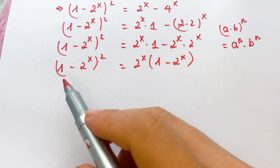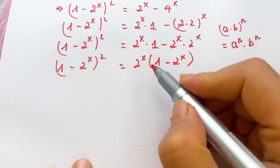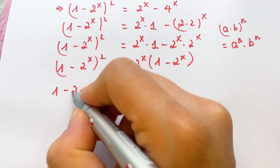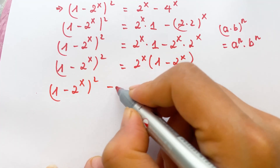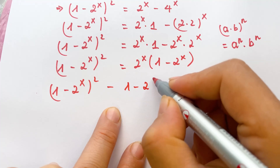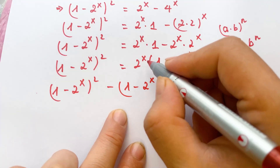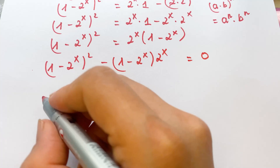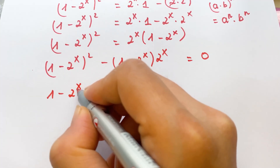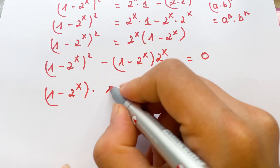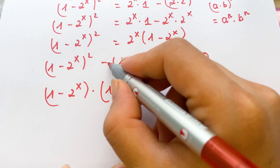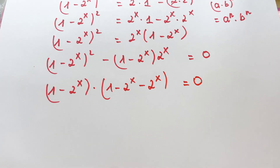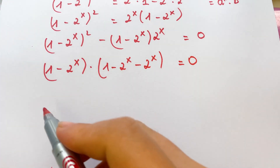Everyone can see we have a common factor. So you need to move the right-hand side to the left-hand side: 1 minus 2 power x, whole power squared, minus 1 minus 2 power x times 2 power x equals 0. Then factor: 1 minus 2 power x, times 1 minus 2 power x minus 2 power x, equals 0.